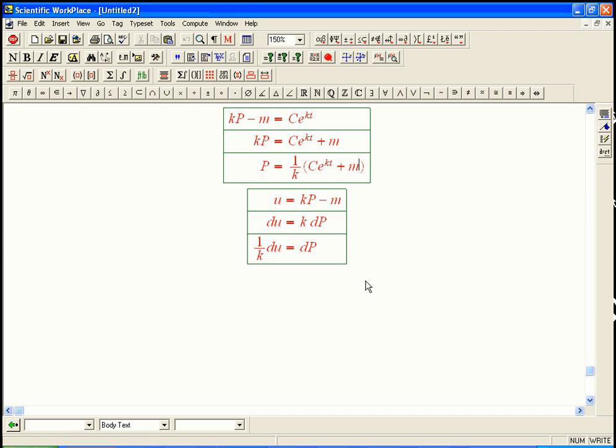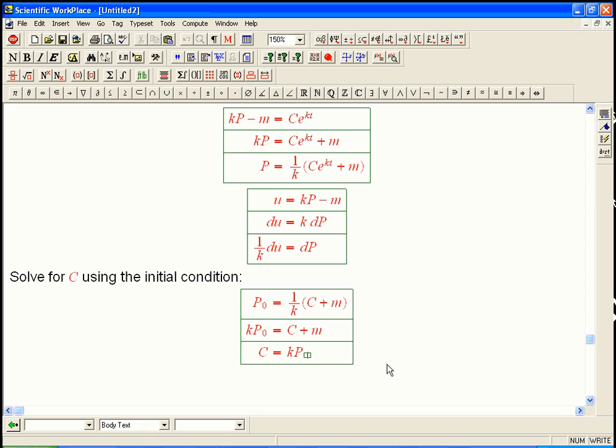Solve for C using the initial condition. So I put P in as P sub zero, P_0. And then I put in t equals zero. So e to the zero, I'm putting them in here. e to the zero is one. It's not too hard to solve for C. And so, in fact, I could have maybe done this a little more efficiently, because you notice I'm actually pushing stuff back over to here. If I had solved it right here, it would have been more efficient. But let's keep going. kP_0 equals C plus m. C equals kP_0 minus m.